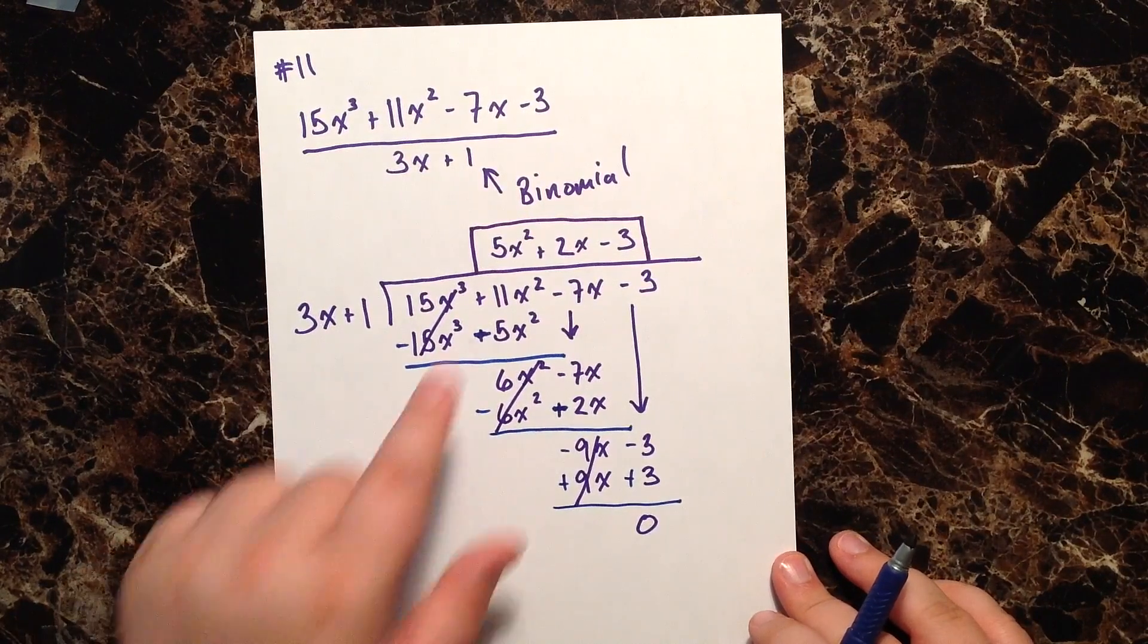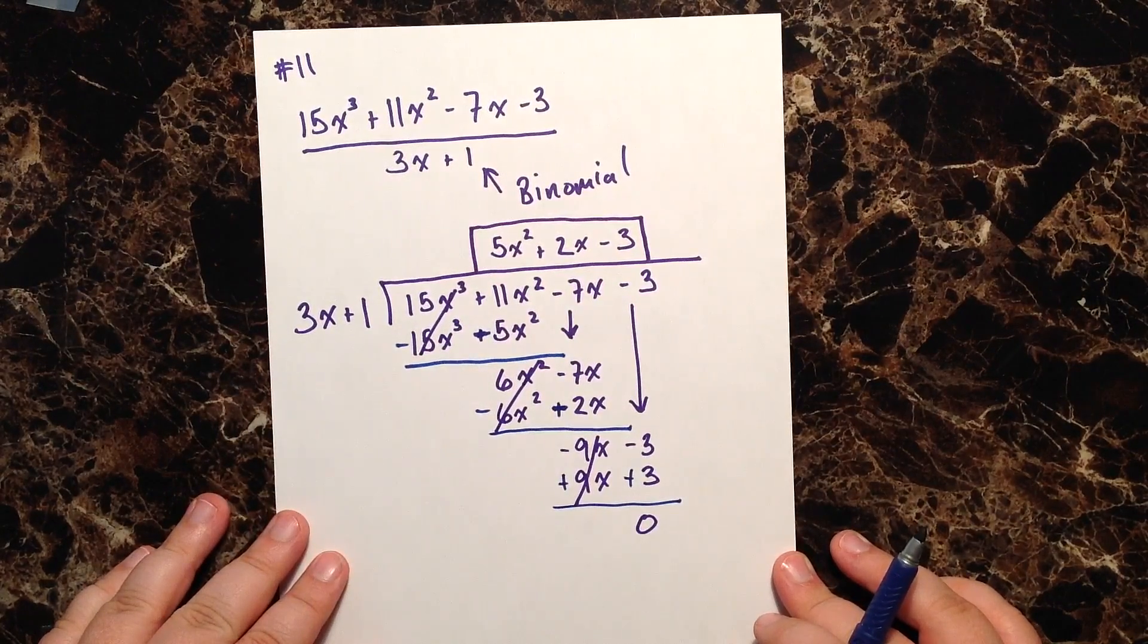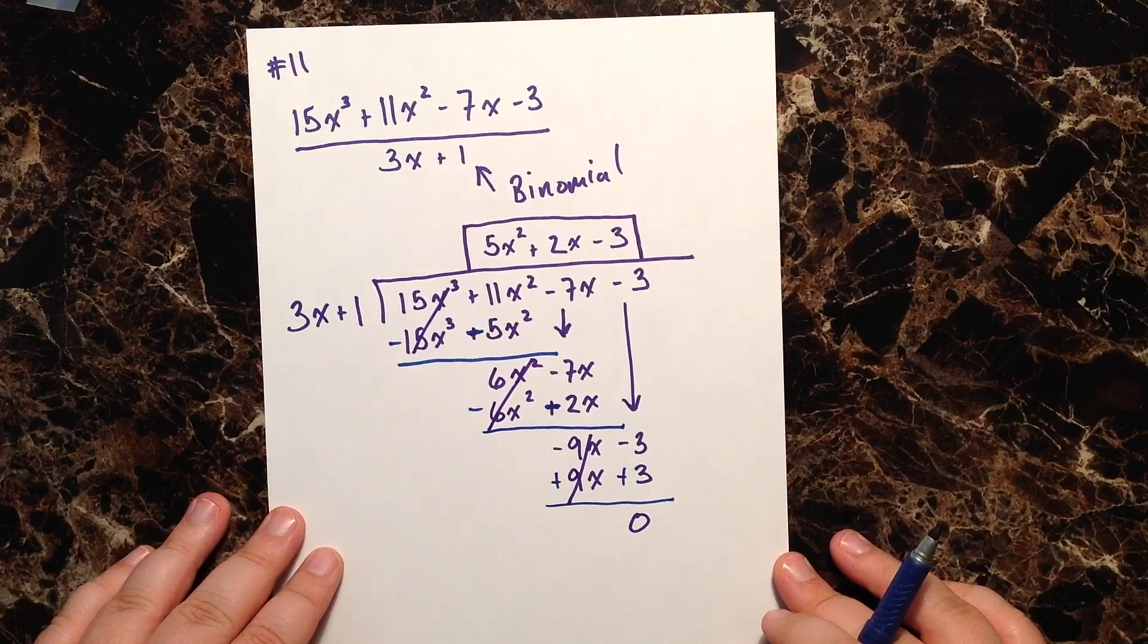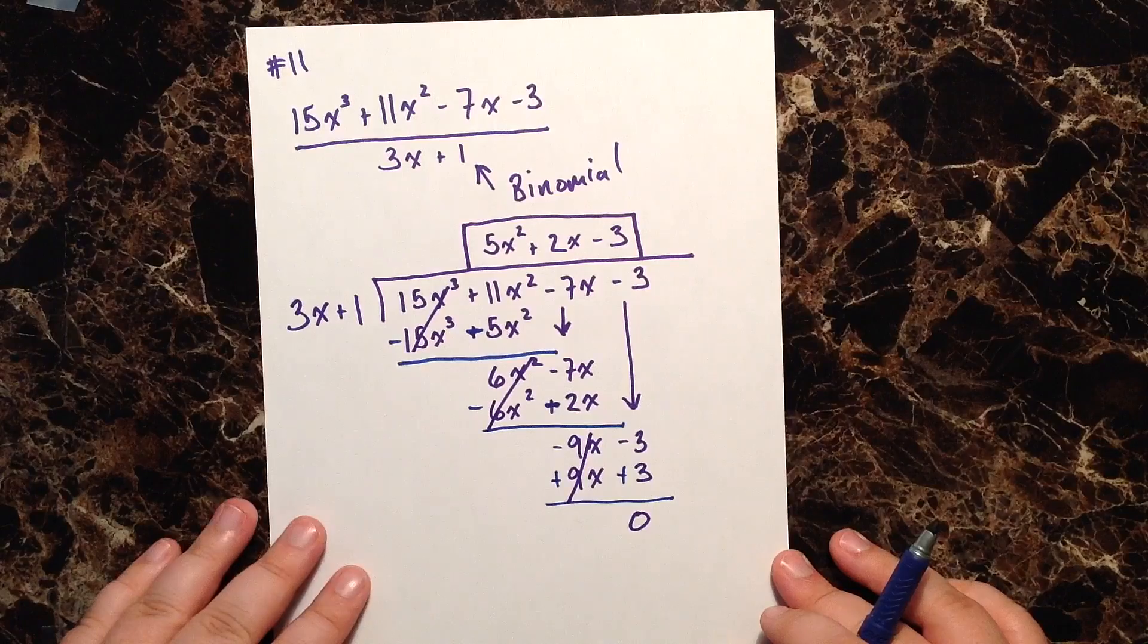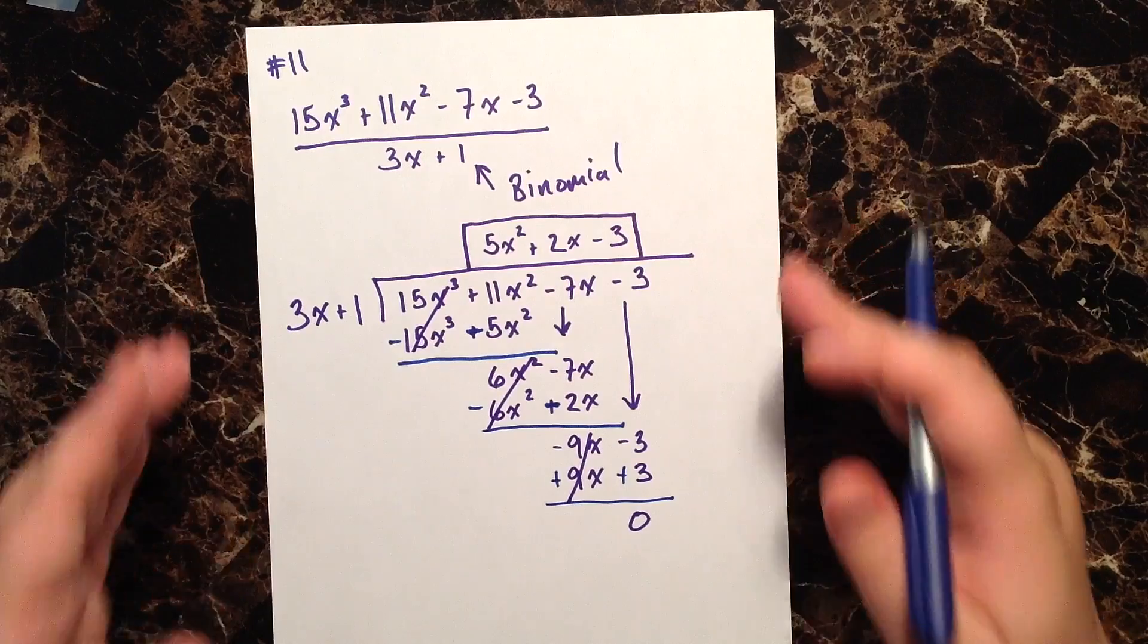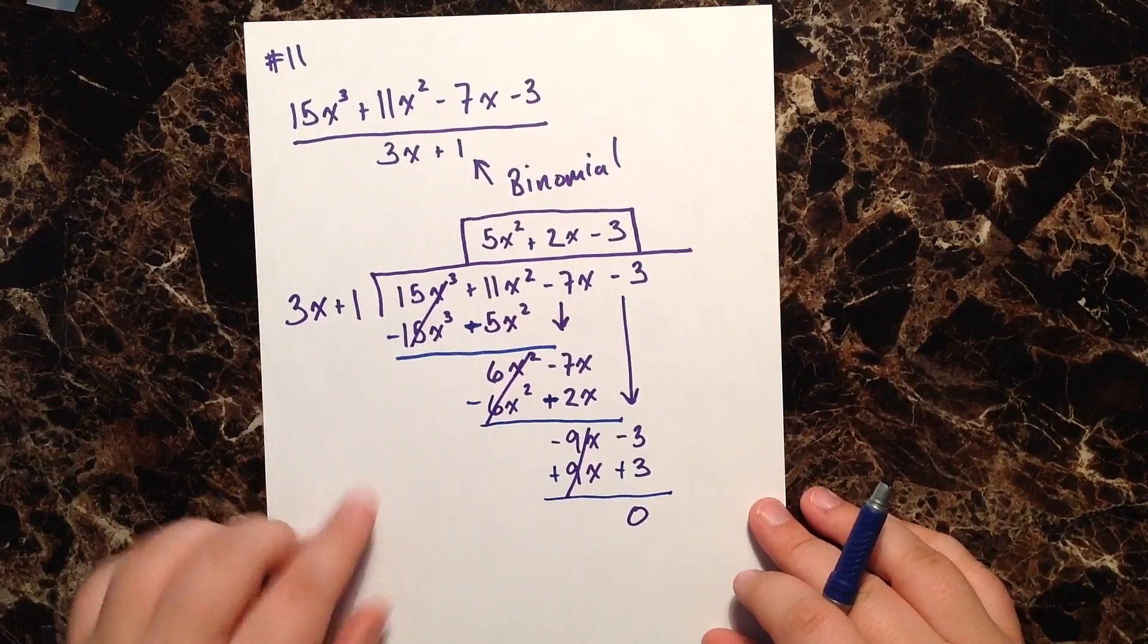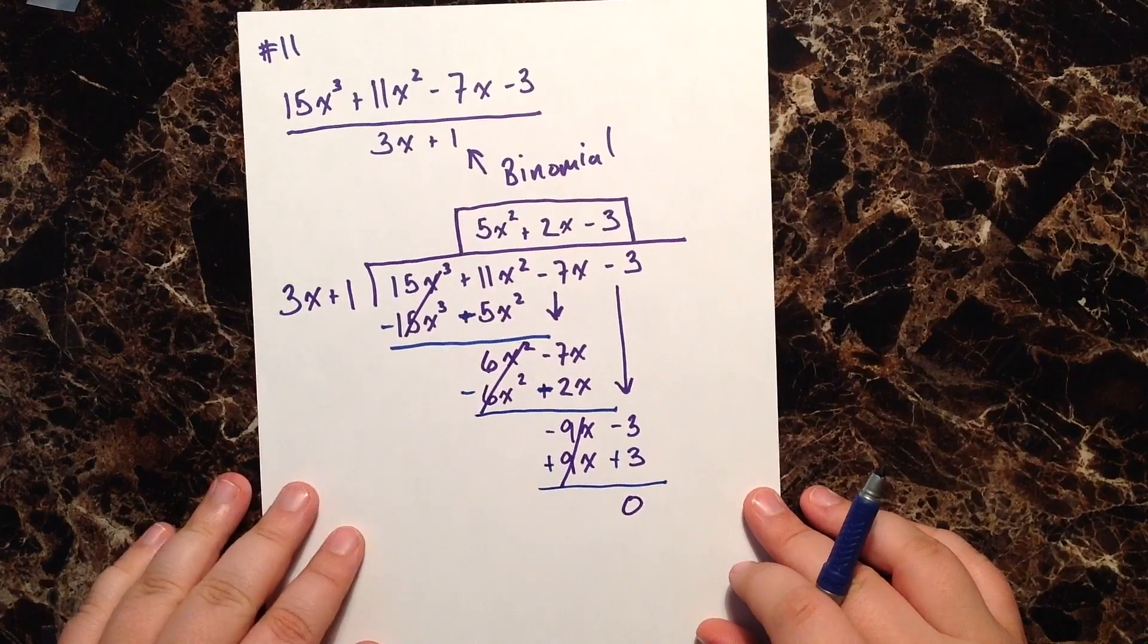And so we get 5x squared plus 2x minus 3. All right, so not too bad. This is long division and sometimes it just takes solving a few of these in practice to get the hang of it. But it really is just a systematic step-by-step process, making sure that our first column with each subsequent process, we're canceling out that first column. Remember we're drawing our line, changing our signs.